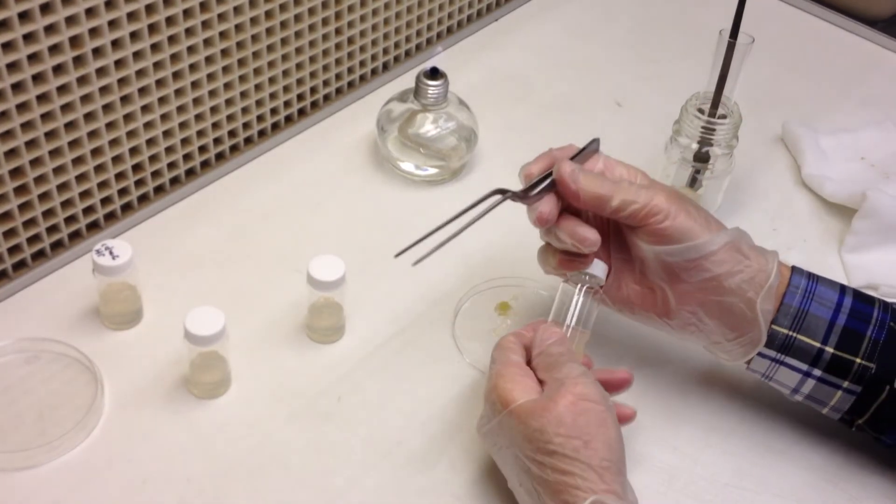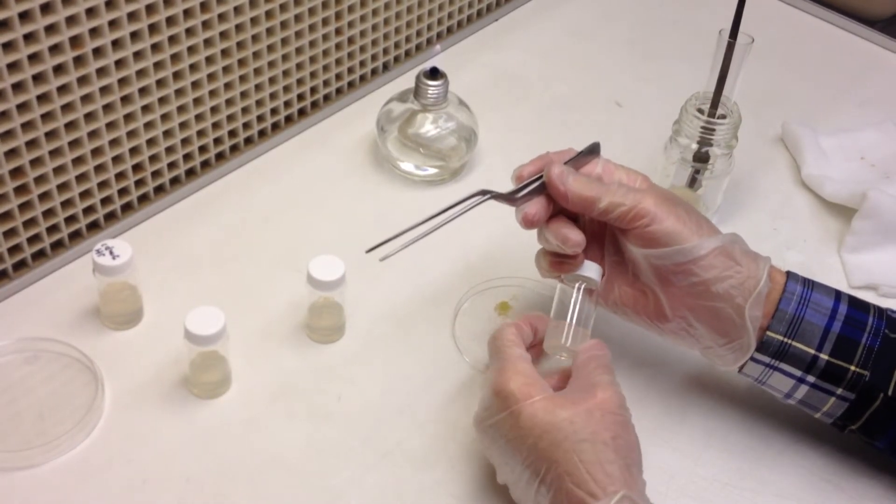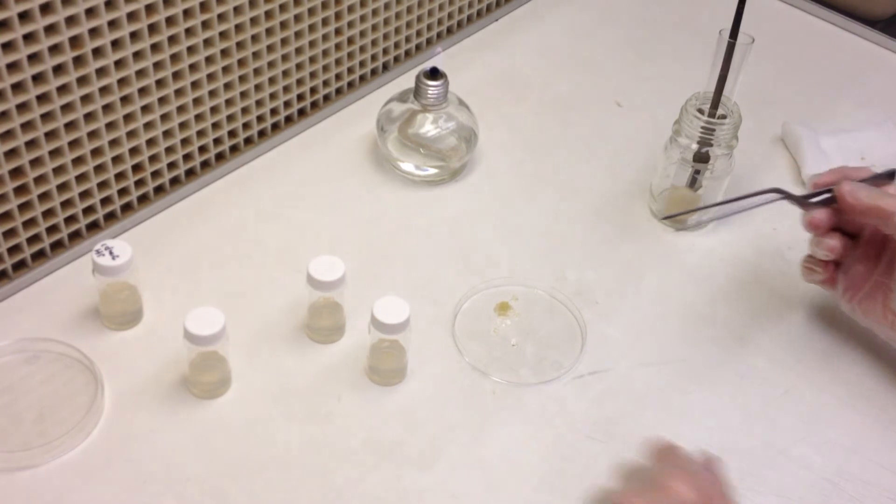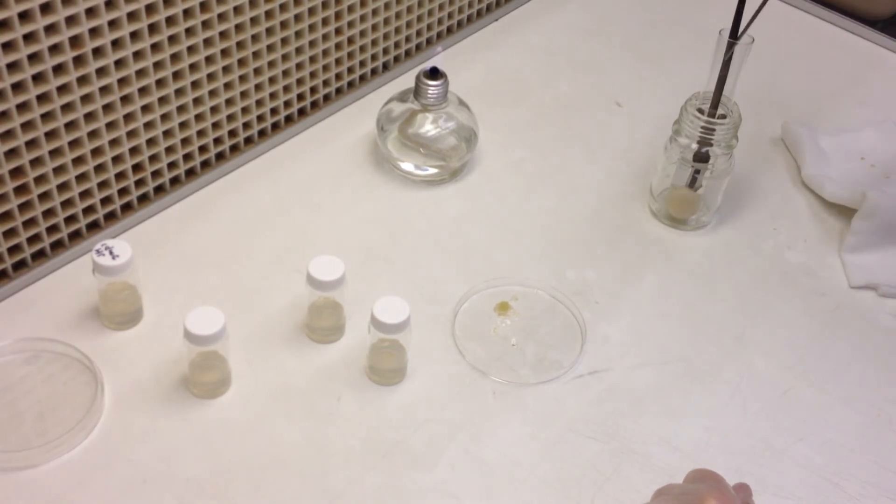Then two vials will have a shooting medium and hopefully you'll see shoots forming on those. And then two will be a rooting medium. So good luck!